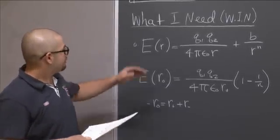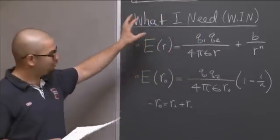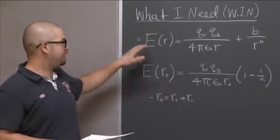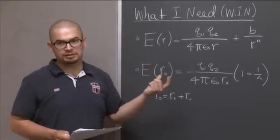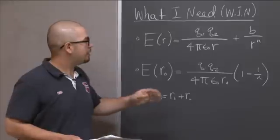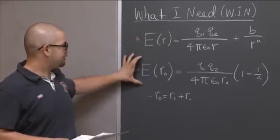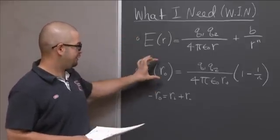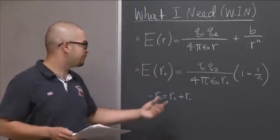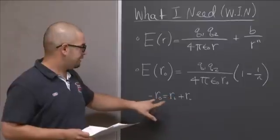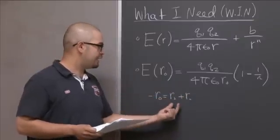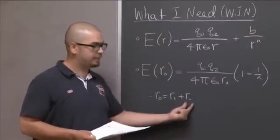What I need, which is WIN, you will win if you know how to manipulate these equations. The first equation is the energy of two charged species as a function of their internuclear separation. The other equation is a function of just the separation between two ion pairs at equilibrium, given by R-naught. R-naught is simply the sum of the radii, the radii of the cation and the radii of the anion.